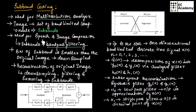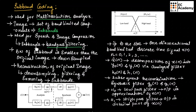This technique is used for speech and image compression, where each subband is generated by band-pass filtering the input image. Since the bandwidth of each subband is smaller than the original image, the subbands can be downsampled without loss of information. The reconstruction of the original image can be done by downsampling, filtering, and summing the subbands.